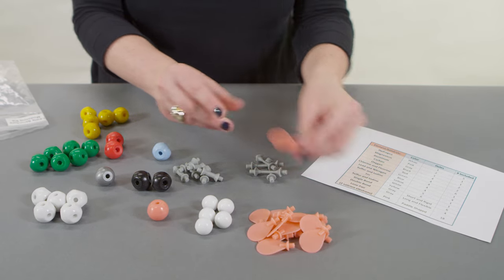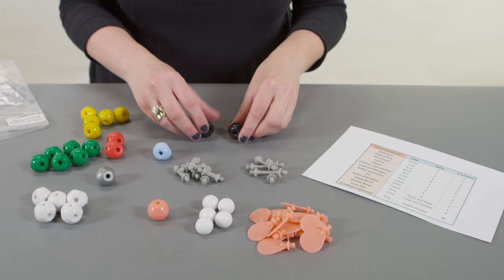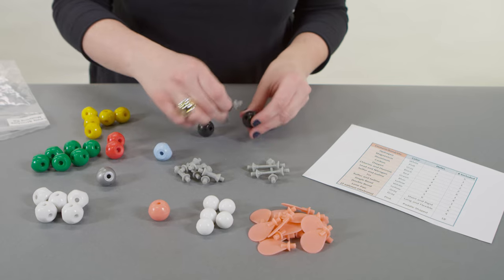When you're comfortable with each piece, you're ready to start building molecules. Let's build ethylene, which has the formula C2H4.